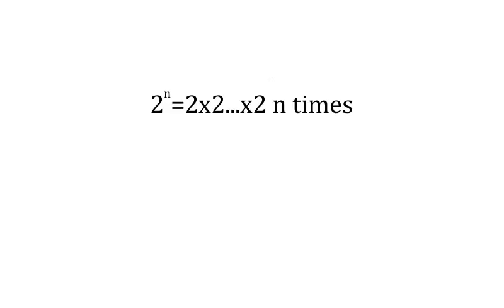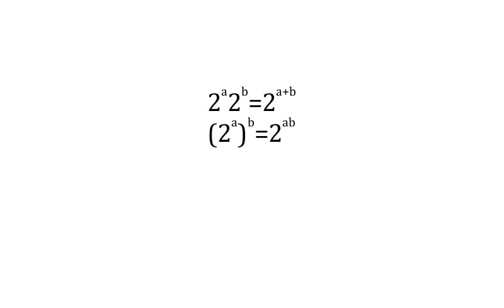Before we look at the irrational case, let's briefly review the standard case using 2 as base. For a positive whole number n, 2 to the n is defined to be 2 multiplied by itself n times. This gives rise to the index laws: 2 to the a times 2 to the b equals 2 to the a plus b, and 2 to the a to the b equals 2 to the a b.